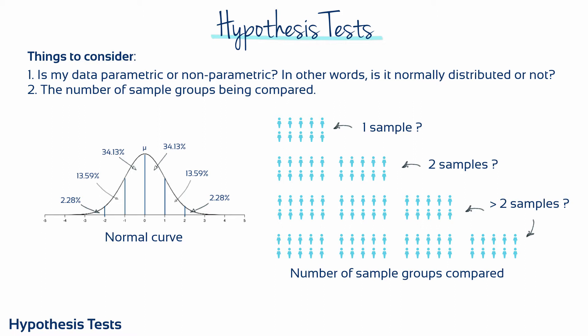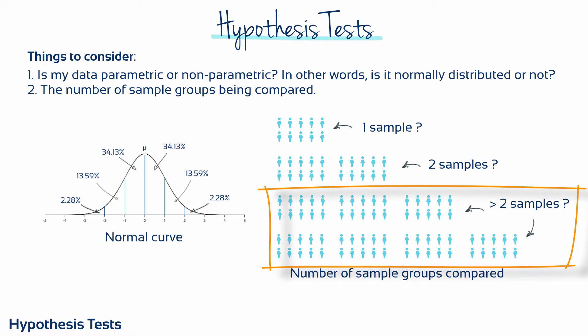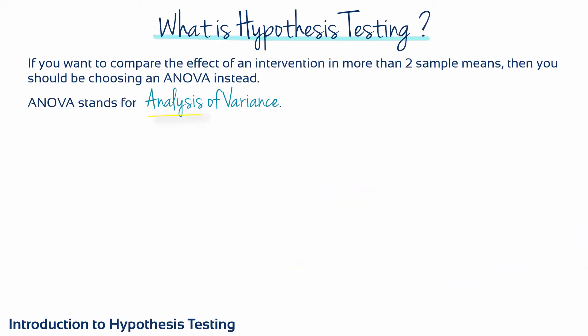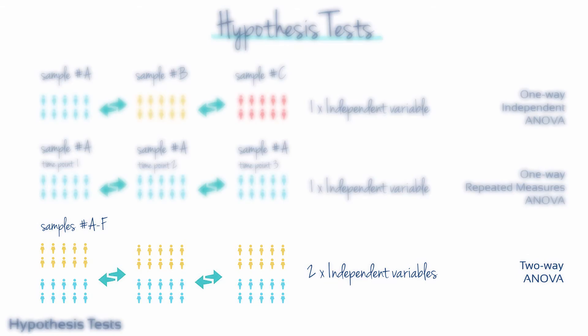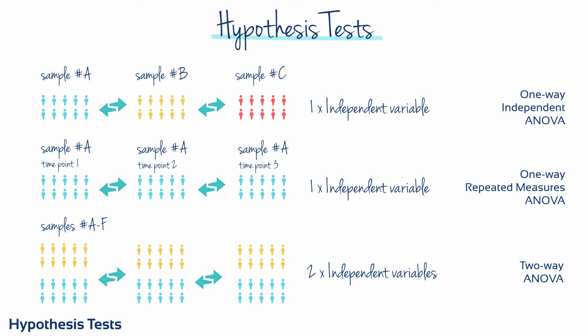If you want to compare the effect of an intervention in more than two sample means, then you should be choosing an ANOVA test instead. ANOVA stands for analysis of variance. There are also distinct types of ANOVA for different study designs. The three we want you to learn to recognize are the one-way independent ANOVA, the one-way repeated measures ANOVA, and the two-way ANOVA. The one-way and two-way language refers to the number of independent variables manipulated in the experiment — one for one-way and two for two-way.